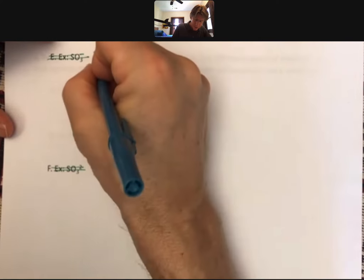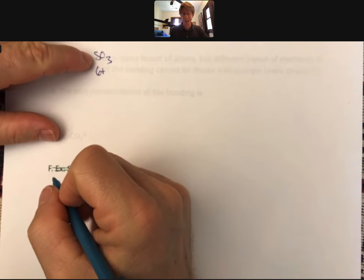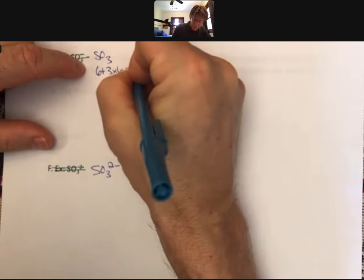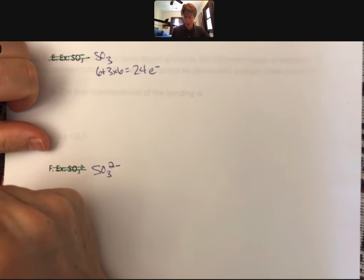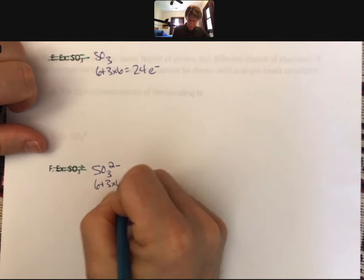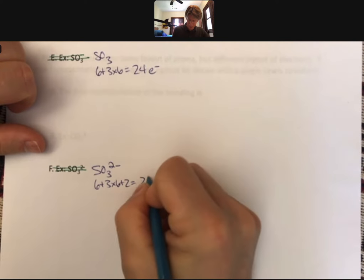So SO3, 6, because sulfur is in the same group as oxygen, 3 times 6. We get 24 electrons up here. If we do the same process down here, we get two more electrons due to the charge. We get 26 electrons.